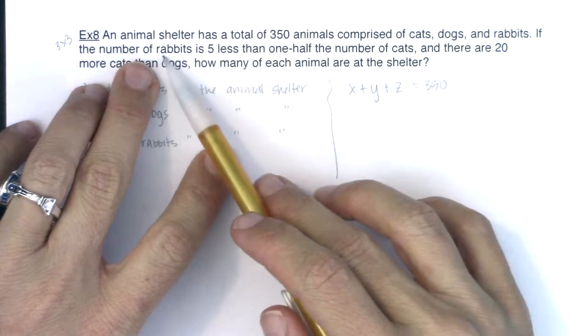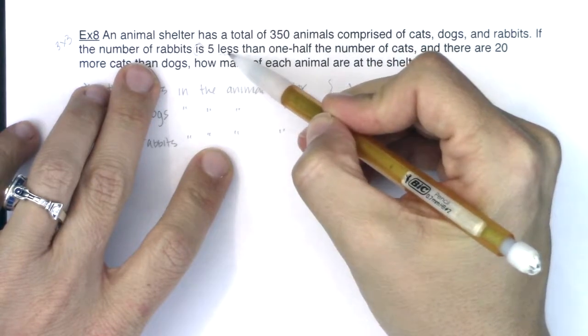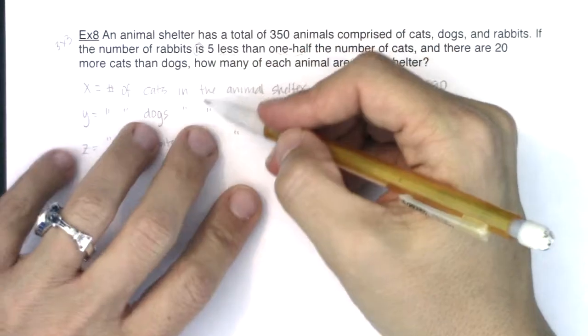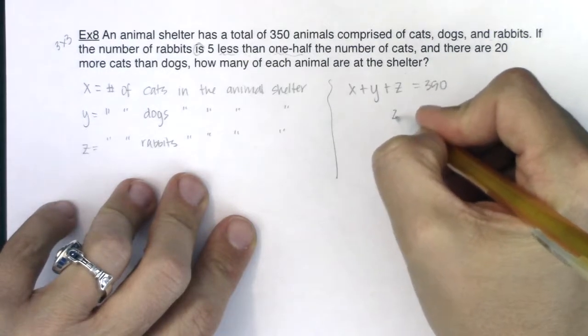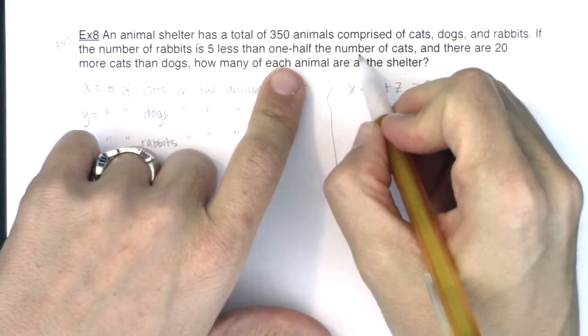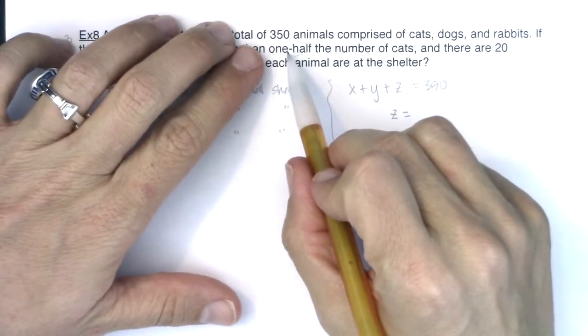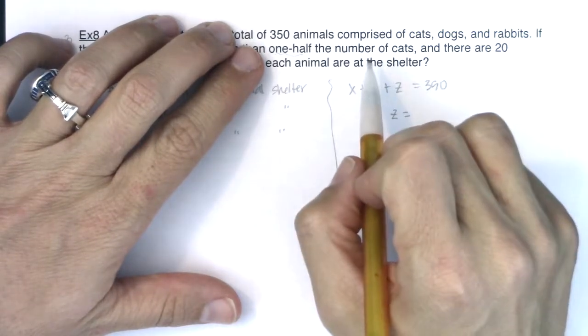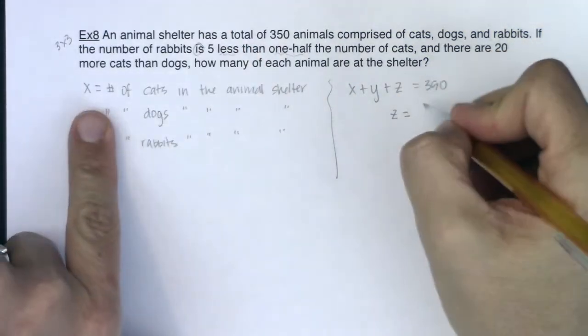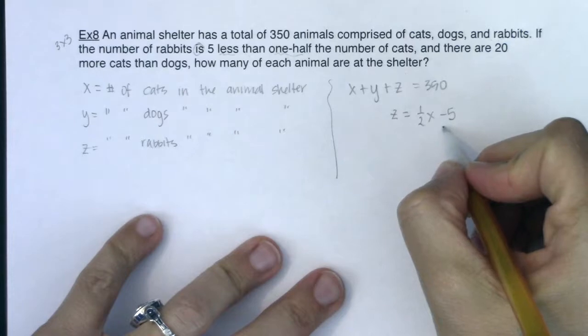Now I hear if the number of rabbits is five less than one-half the number of cats. I see the 'is' which will be an equal sign. The number of rabbits is z, so z equals five less than one-half the number of cats. One-half the number of cats implies multiplication, so z equals one-half x minus 5.